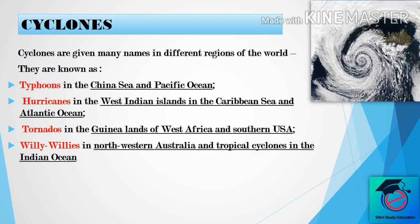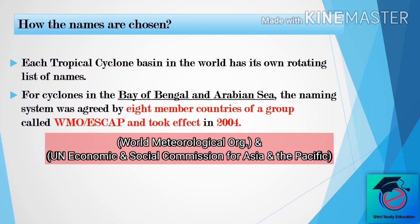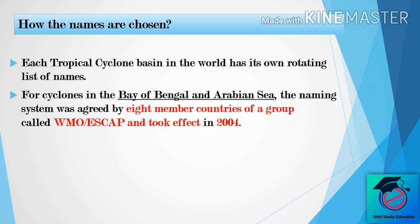Next we will discuss about how cyclone names are chosen. Each tropical cyclone basin in the world has its own rotating list of names. In the Bay of Bengal and Arabian Sea, this naming system was agreed upon by eight member countries of a group called WMO ESCAP, which stands for the World Meteorological Organization and the United Nations Economic and Social Commission for Asia and the Pacific, for the tropical cyclones warning system.